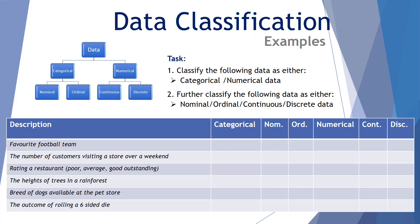Let's look at some examples. First of all, I want you to consider the following six pieces of data. I want you to classify them as either categorical or numerical as the first task. The second task is to further classify the data as either nominal, ordinal, continuous, or discrete. So please pause here and have a go at these six examples with classification.